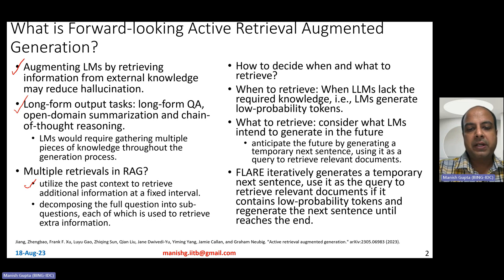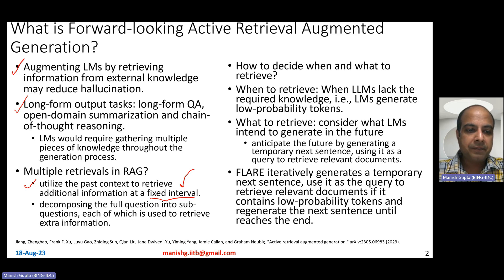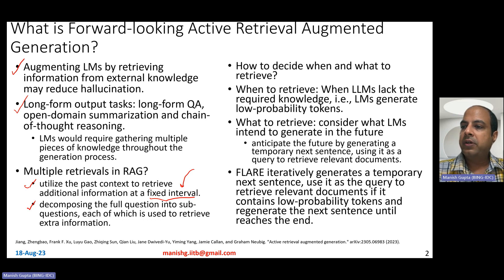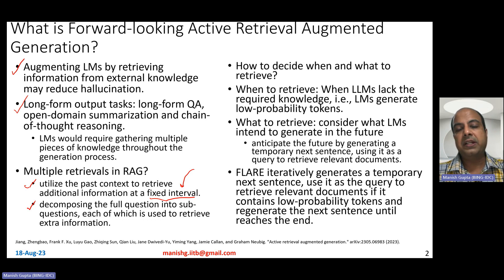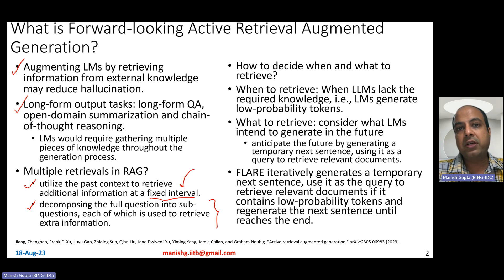So far, people have experimented with fixed interval-based multiple retrievals — essentially after every one sentence or every 10 words, you retrieve, regardless of whether retrieval is actually needed at that point. Another way people have tried multiple retrievals is by taking the question and decomposing it into small sub-questions. For example, if somebody asks what are the capitals of India, Sri Lanka, and South Africa, you split it into multiple questions: what is the capital of India? What is the capital of South Africa? What is the capital of Sri Lanka? And for each sub-question, you do retrieval.